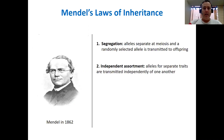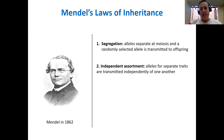The second of Mendel's laws of inheritance is the law of independent assortment, which says that a locus segregates independently of the rest of the genome. This means that alleles at a particular locus are segregating independently with respect to other genetically influenced traits.